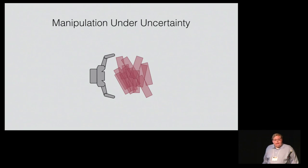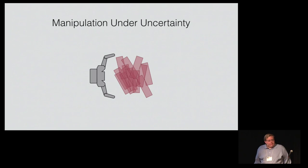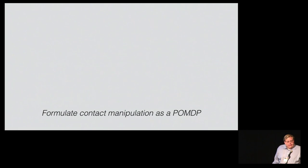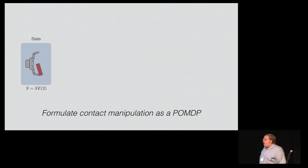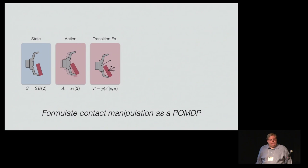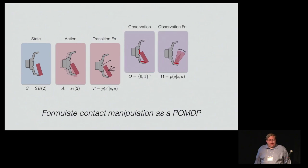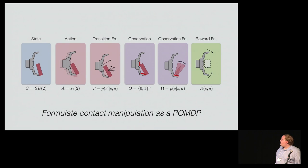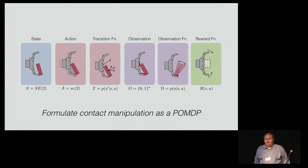We propose to deal with this uncertainty using real-time feedback from contact sensors, and we formulate this problem as a POMDP. In particular, we consider a POMDP where state is pose of the object relative to the hand. Actions are relative motions of the end effector, which may push the object if you come in contact with it. Observations are binary readings from contact sensors which may cover a part of the hand surface. Our goal is to optimize some task-dependent reward function, which may, for example, drive the object to be graspable or into some region in the hand frame.